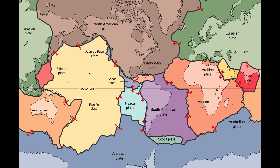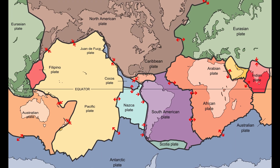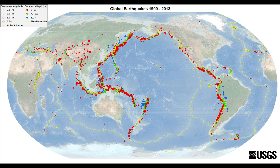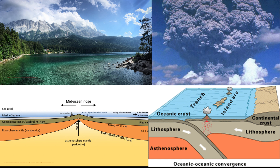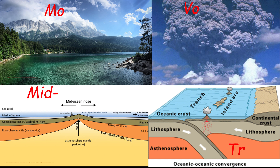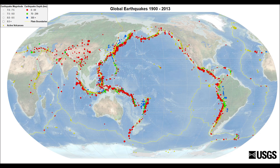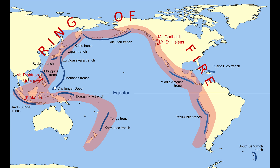A plate boundary is the point at which two plates come together. Plate boundaries correlate with geological events like earthquakes and the formation of topographic features including mountains, volcanoes, mid-ocean ridges, and oceanic trenches. The bulk of active volcanoes on the planet are along plate boundaries, with the ring of fire being the most active and well-known.